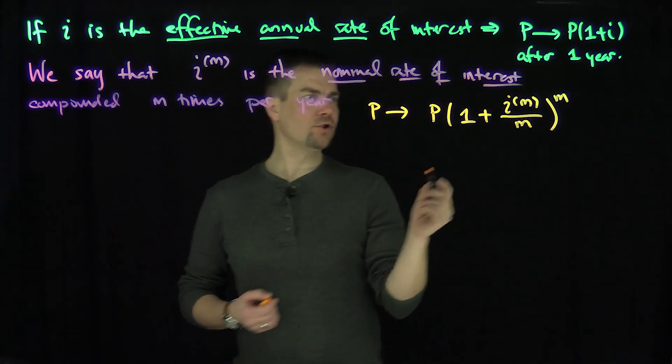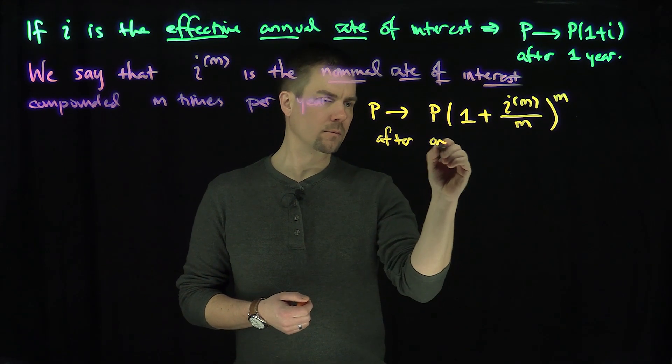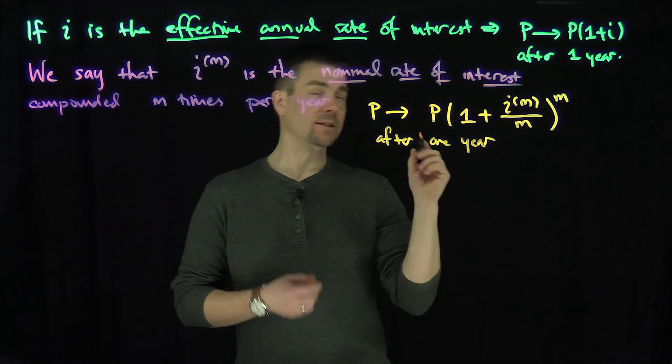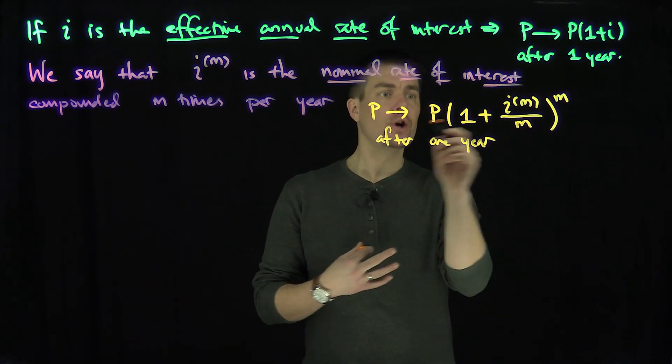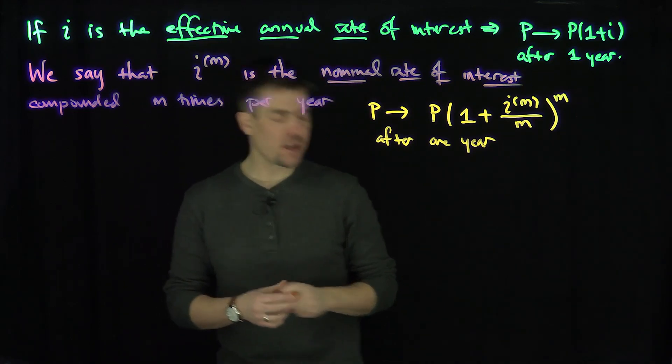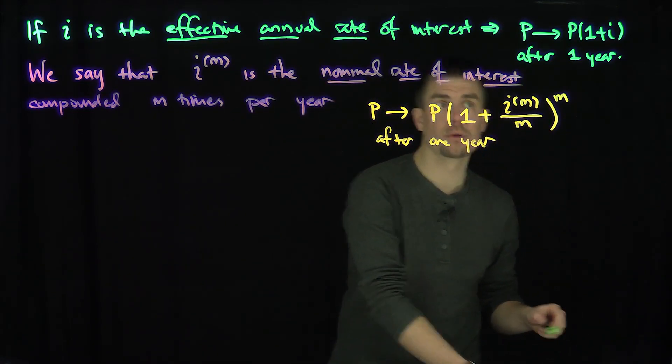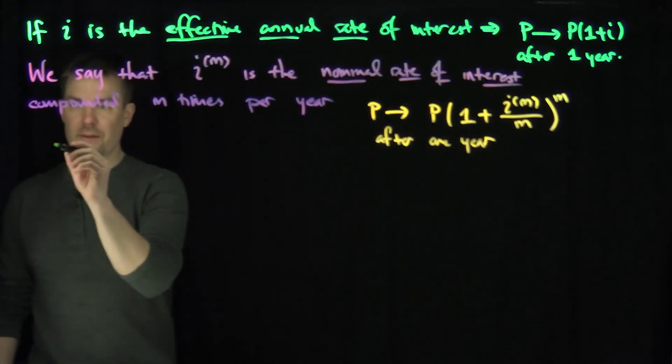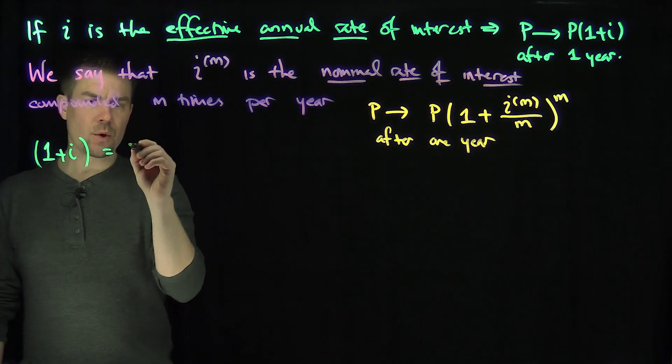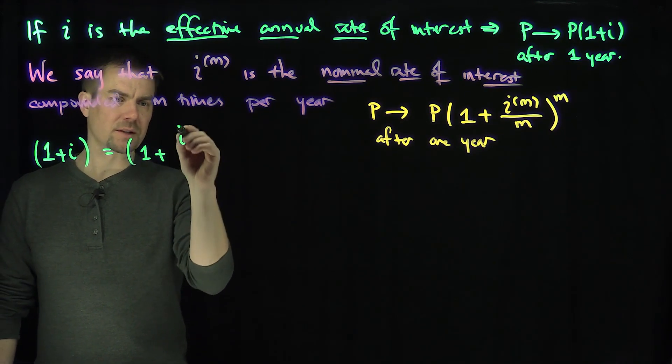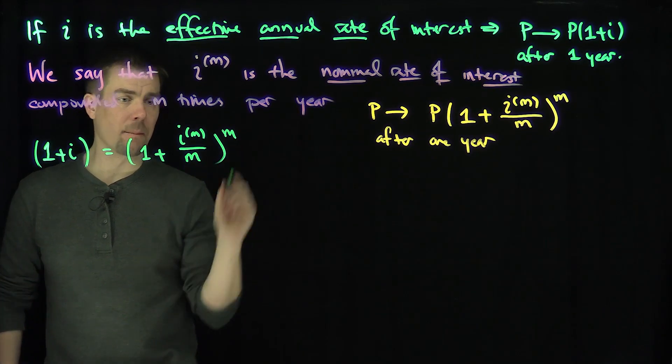We can see from these two relationships that this is after one year. That's exactly the definition of i_m, the nominal rate of interest. After one year, you accumulate to this. So we see from these two representations that we have the following equivalent relationship: 1+i is equal to (1 + i_m/m)^m.